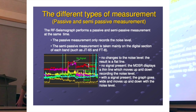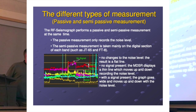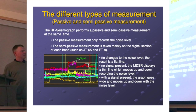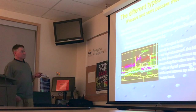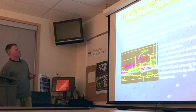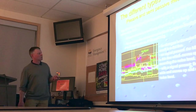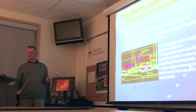Sometimes it's really hard to tell the difference between a man-made signal and a nature-created signal. The semi-passive measurement allows us to do both at the same time. If there's no signal, the line is really thin and flat.